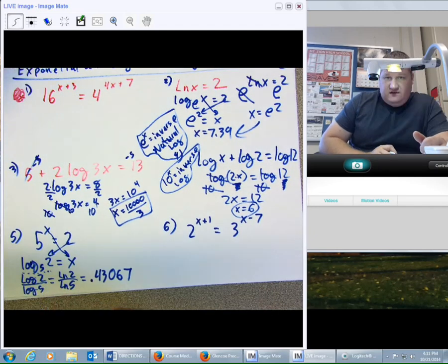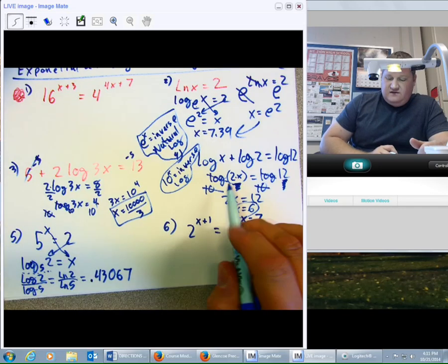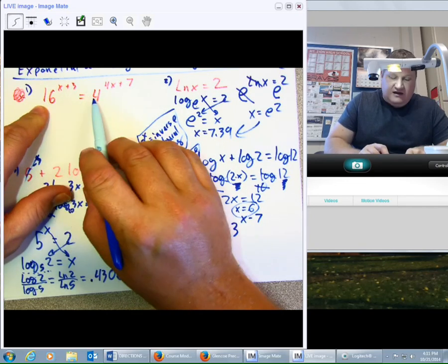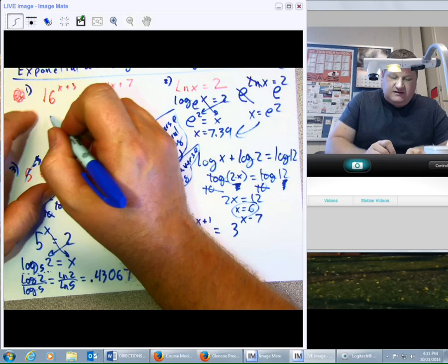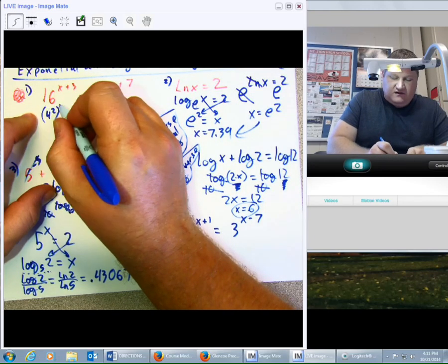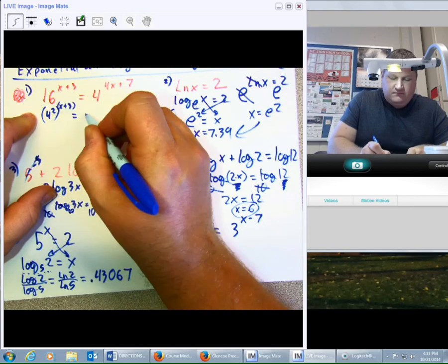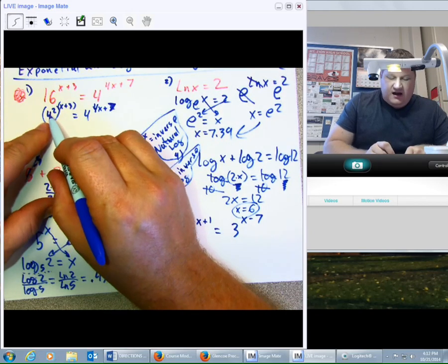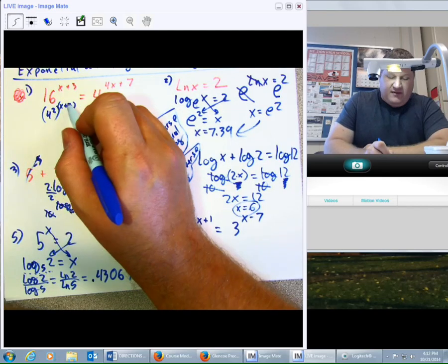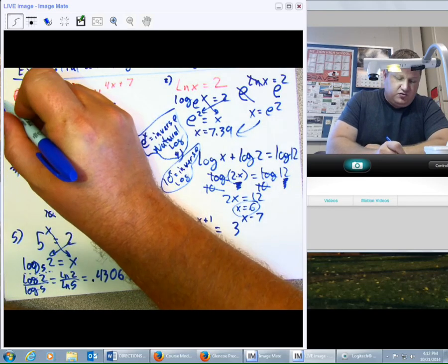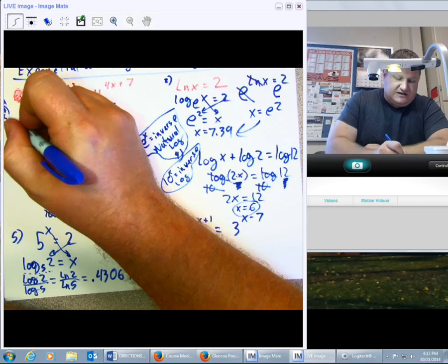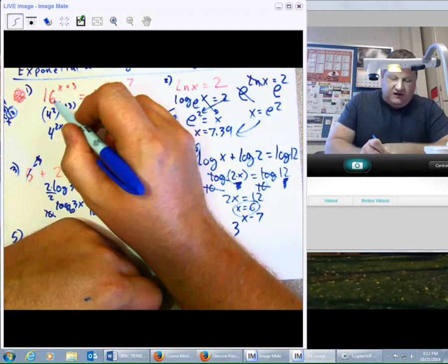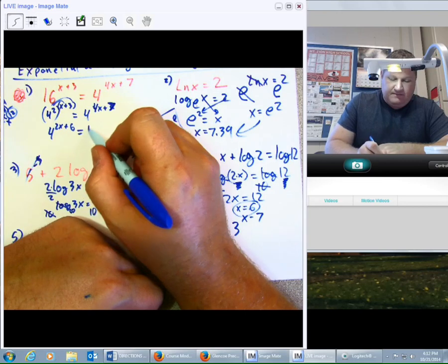That brings us to the last type. And in a similar way as if I have log of something equals log of something else, if I have something raised to a power and something raised to a power, if I could get the basis to be the same by rewriting 16 as 4 squared, then I can really start to simplify some things down. Now, if I have power to a power, if I have x cubed to the 4th, I'm going to say x to the 12th. I'm going to multiply those. That's the rule for exponents. 4 to the 2x plus 6, because I give that 2 away to each piece, equals 4 raised to the 4x plus 7.